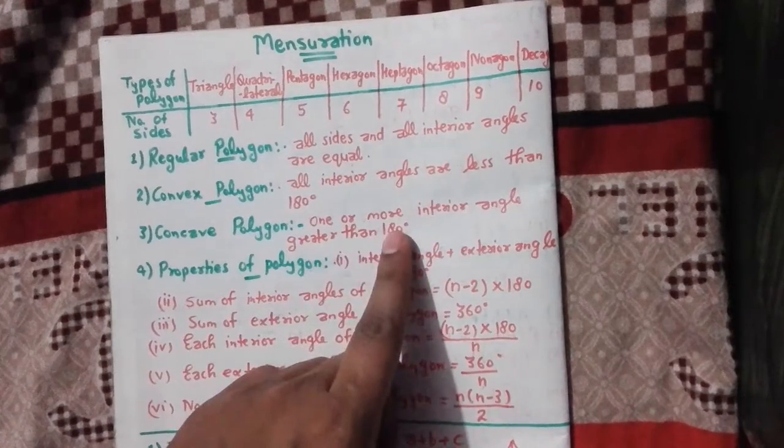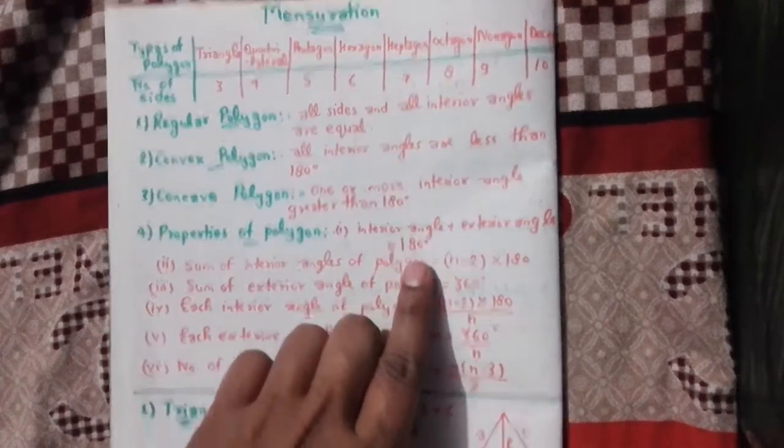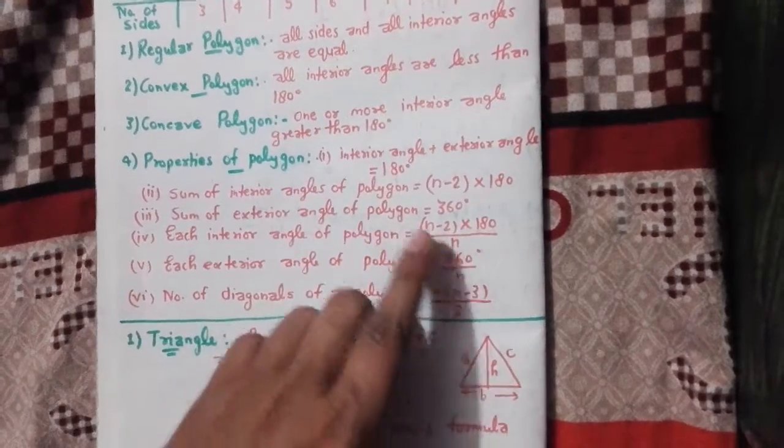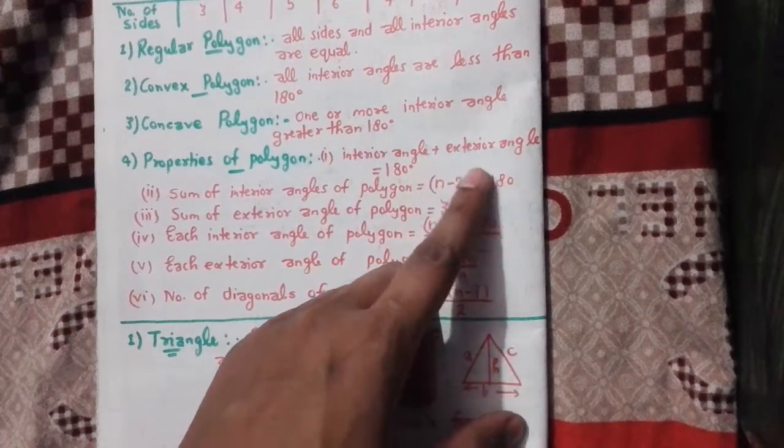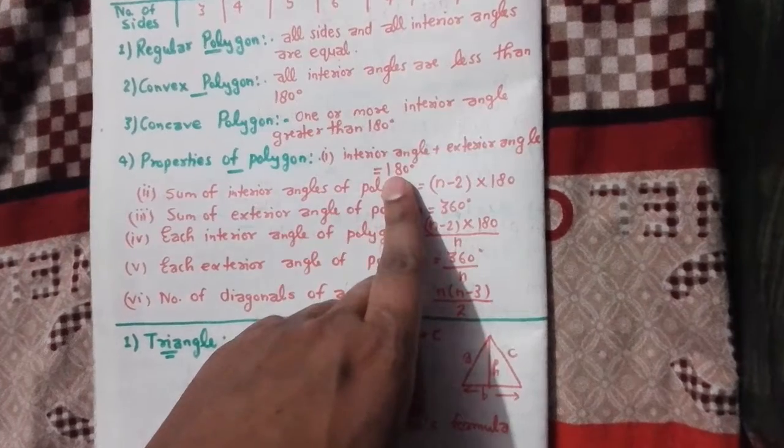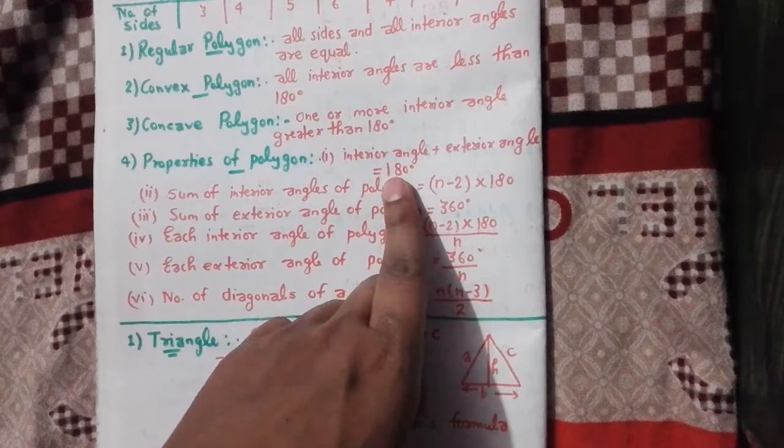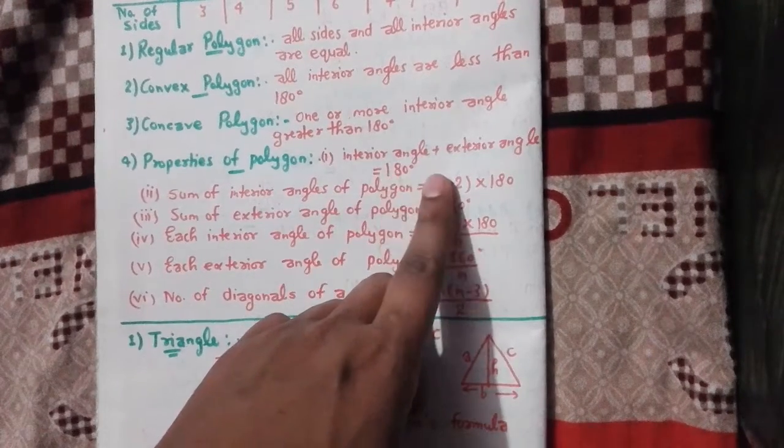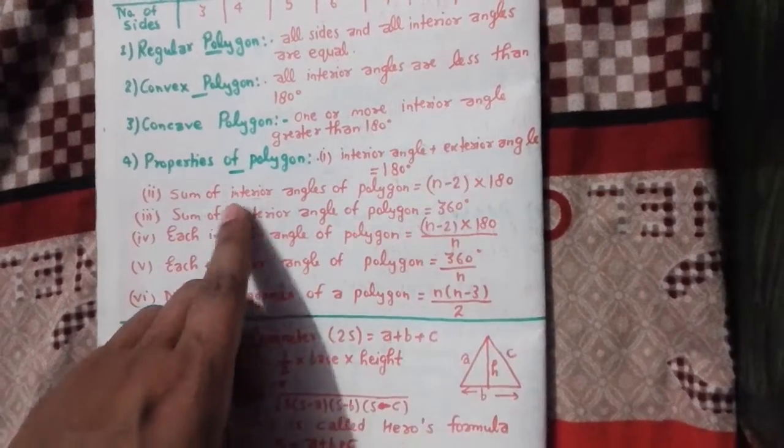Concave polygon: any interior angle will be greater than 180 degrees. Some properties of polygons: interior angle plus exterior angle equals 180 degrees.